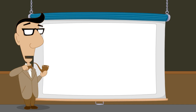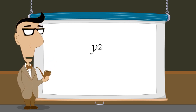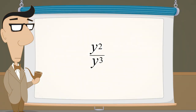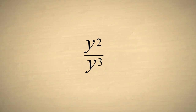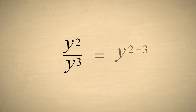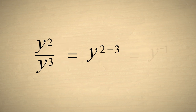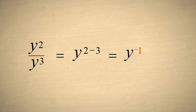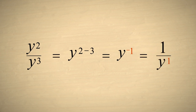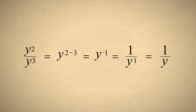Next we will simplify the expression y squared divided by y cubed. Subtracting the exponents, we get y with an exponent of negative one. This is equal to one over y to the first power, which is the same as one over y.